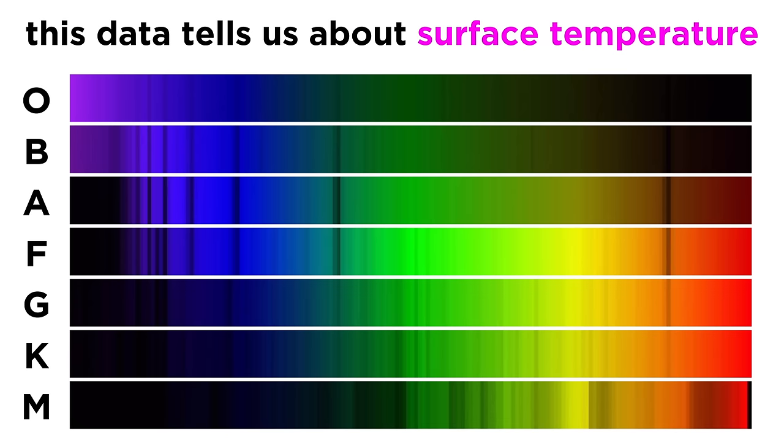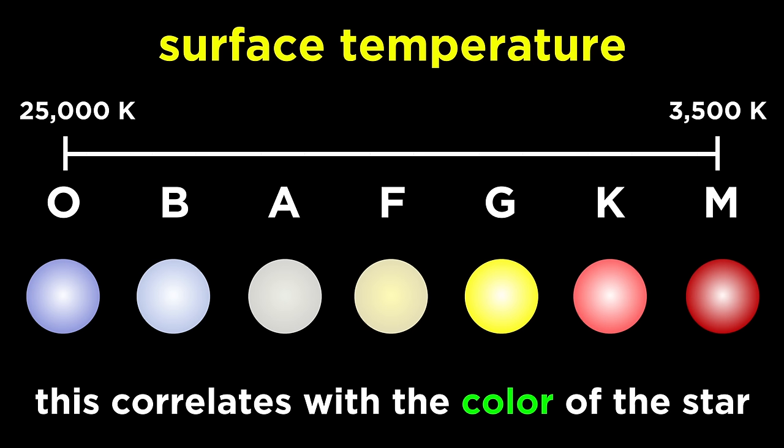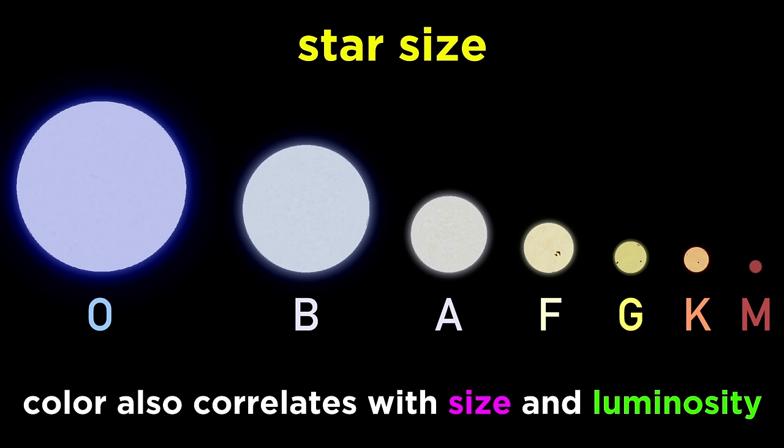So the convention is derived from temperature, but this happens to correlate with color and size as well. Hotter objects, like O and B stars, are blue, and cooler objects, like K and M stars, are red. Also, hotter stars tend to be larger and burn brighter, with the additional heat resulting from the fact that so much more fuel is being burned.